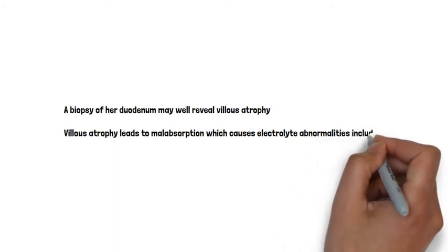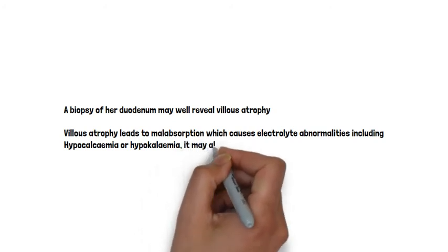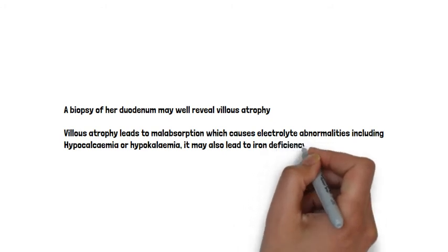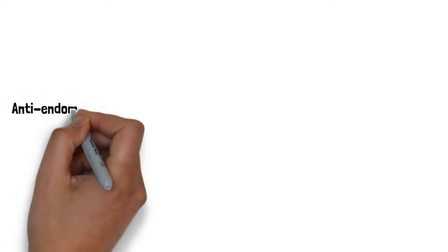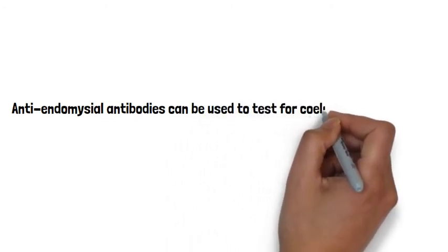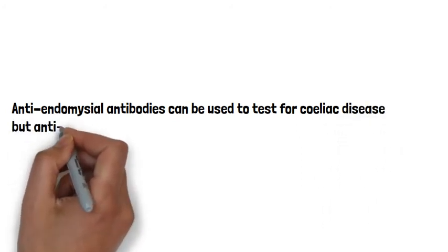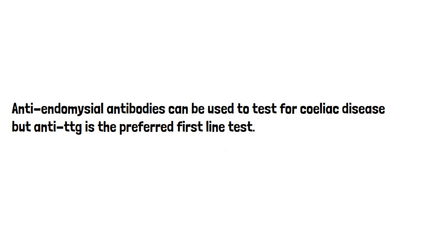The problem with the villi leads to electrolyte abnormalities, which are very common in coeliac disease, including hypocalcaemia and hypokalaemia. Coeliac patients can also be iron deficient. The best initial test is the anti-TTG, and patients are encouraged to continue a gluten diet for six weeks prior to testing — we want gluten to continue for those six weeks because it's not an effective test if patients have stopped gluten. Anti-endomysial antibodies can also be used but they are second-line; anti-TTG is first-line.